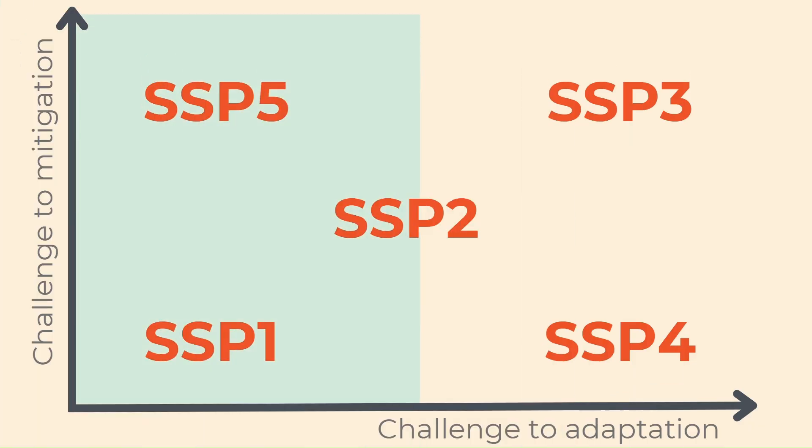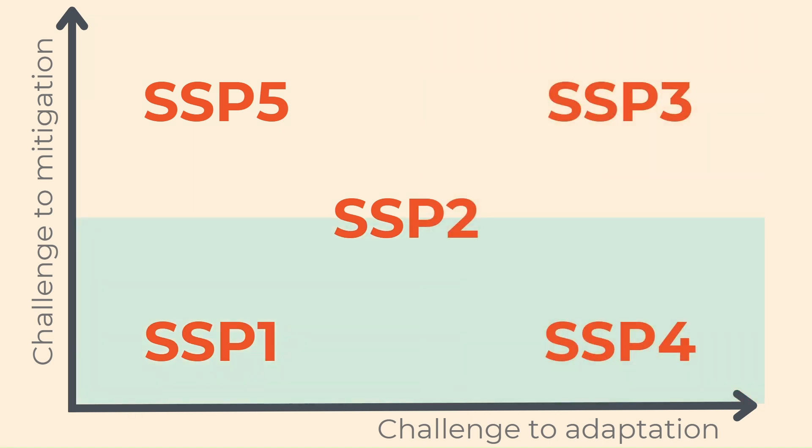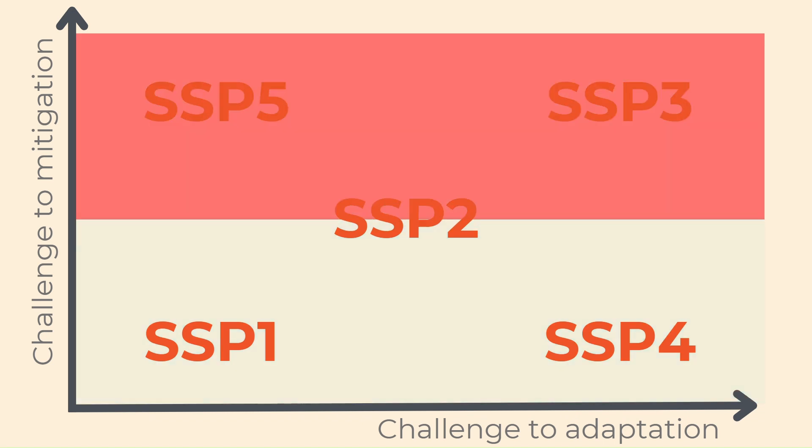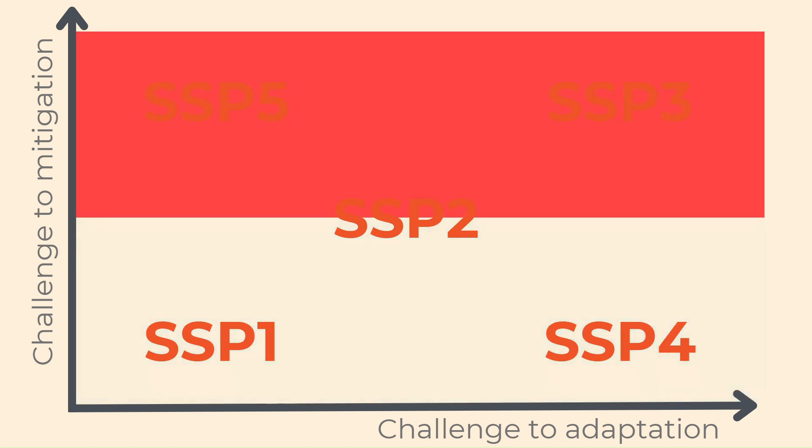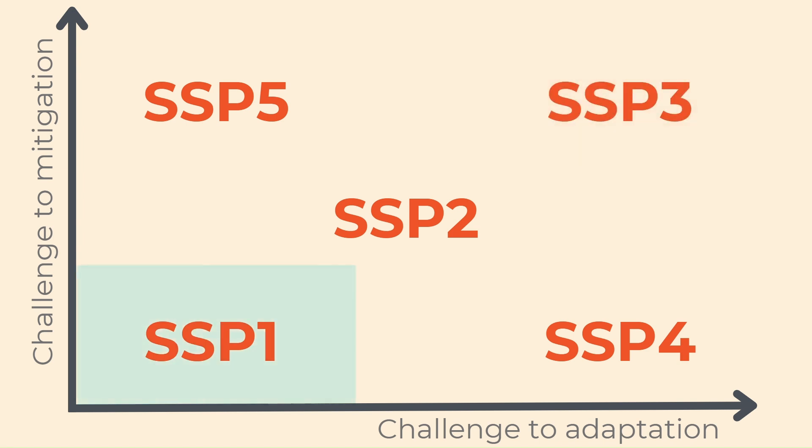The scenarios on the left of the graph have fewer adaptation challenges than the scenarios on the right. Whereas the scenarios at the bottom have fewer mitigation challenges than the scenarios at the top. The scenario with the most challenges is SSP3. By contrast, the scenario with the fewest challenges is SSP1.